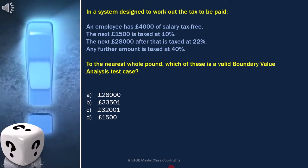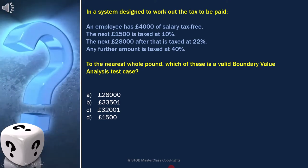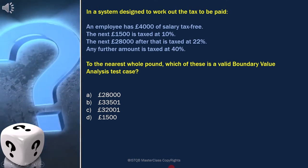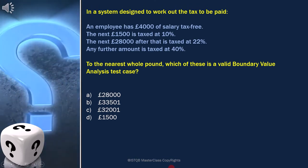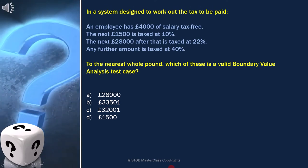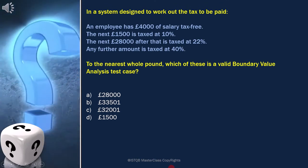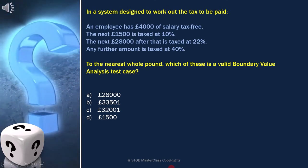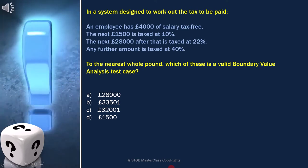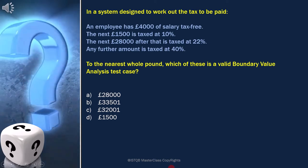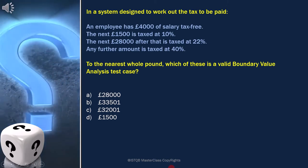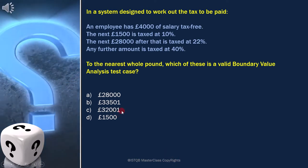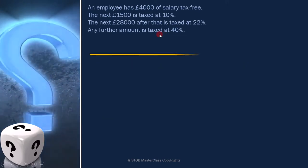Here the question is: in a system designed to work out the tax to be paid, an employee has 4,000 euros of salary tax-free. The next 1,500 is taxed at 10%. The next 28,000 after that is taxed at 22%. Any further amount is taxed at 40%. To the nearest whole pound, which of these is a valid boundary value analysis test case? To solve this question, we first have to draw a boundary value analysis diagram.